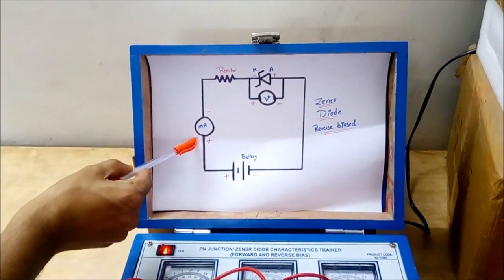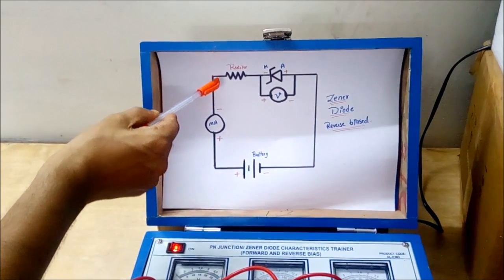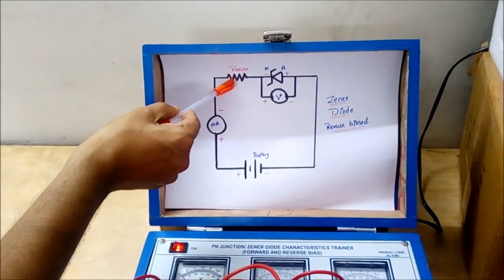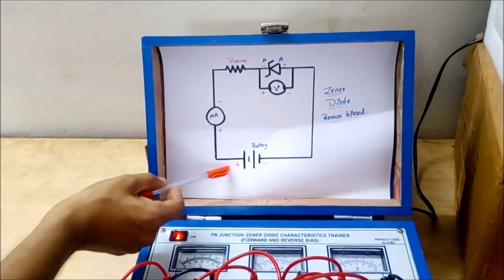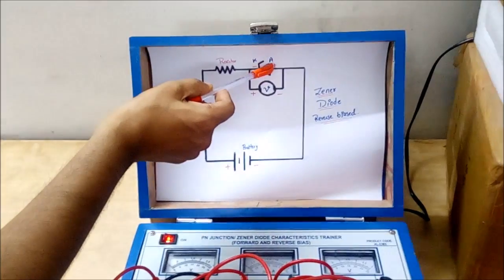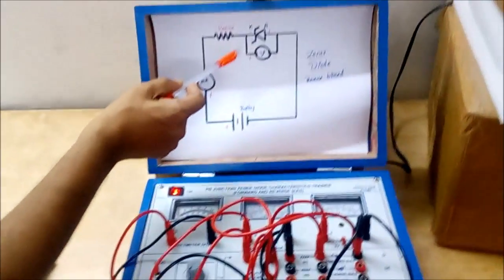Positive end of the battery is connected with the millimeter positive. Negative of the millimeter is connected along with one end of the resistor. The resistor's one end is connected to the cathode. As we can see from the connection, positive is connected with the negative. The anode is connected along with the battery's negative terminal, so this makes it reverse bias.